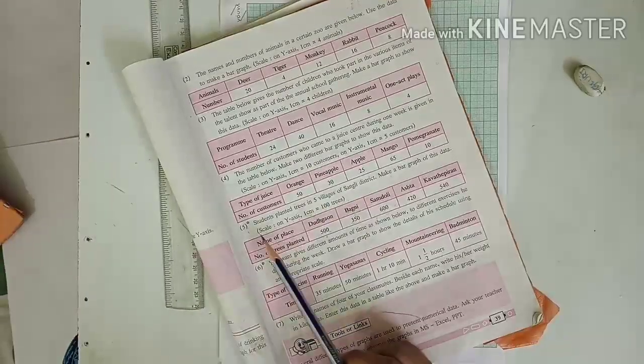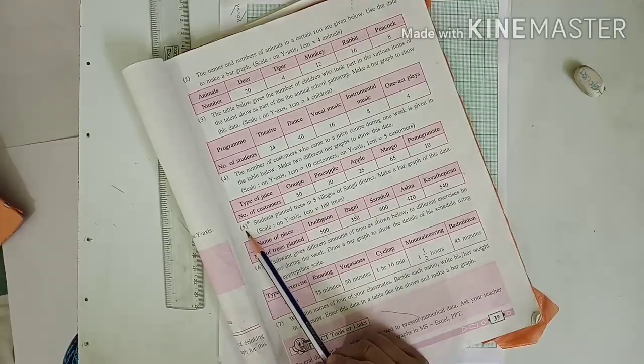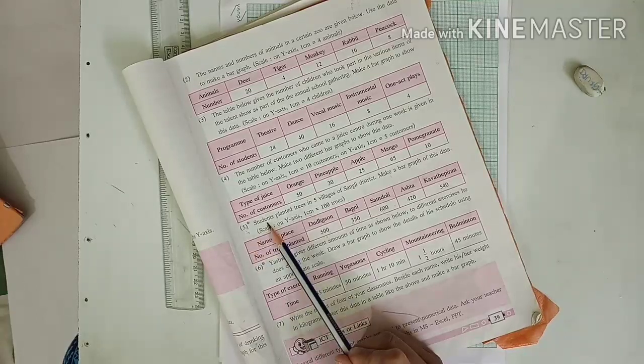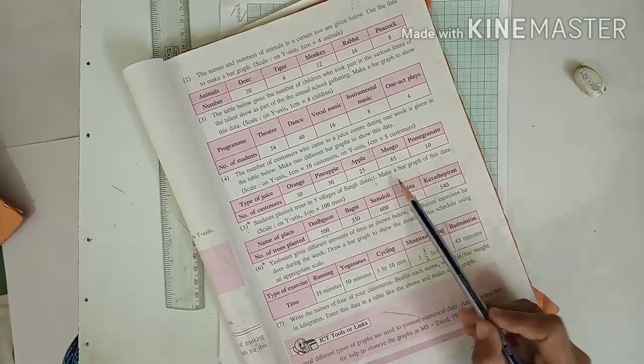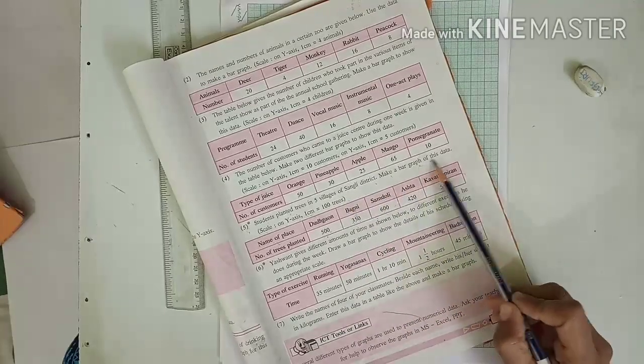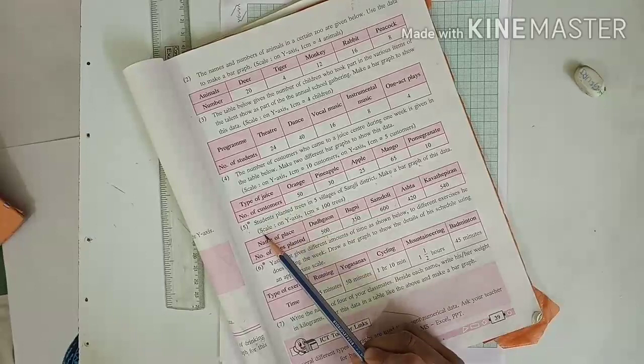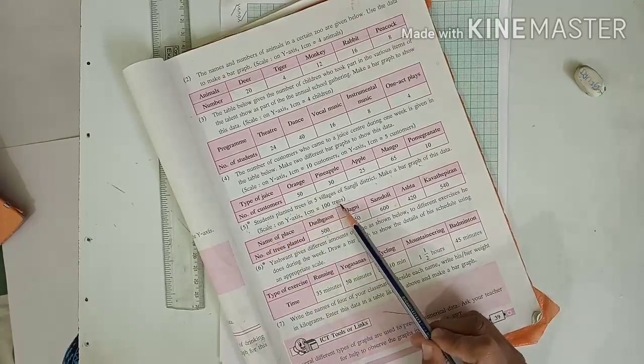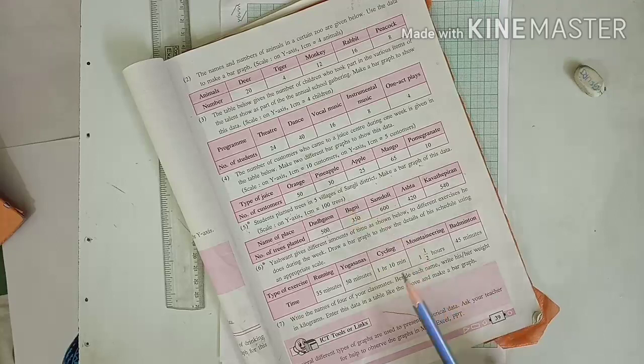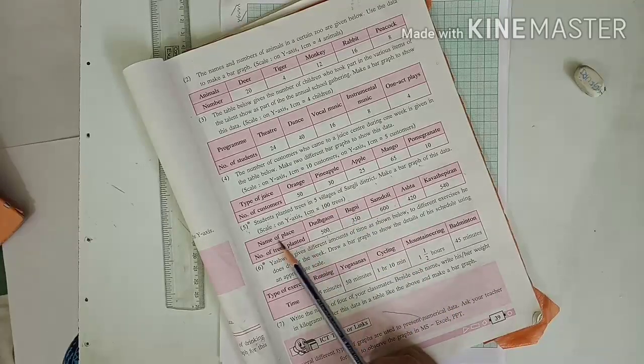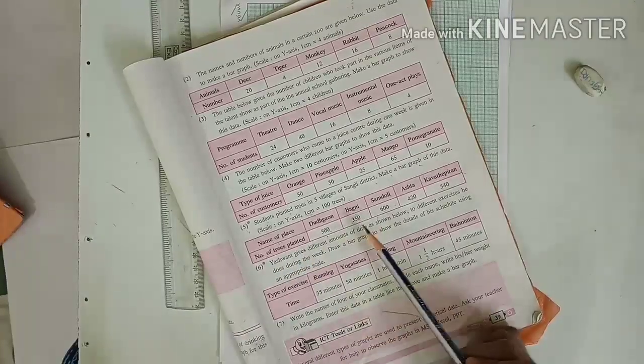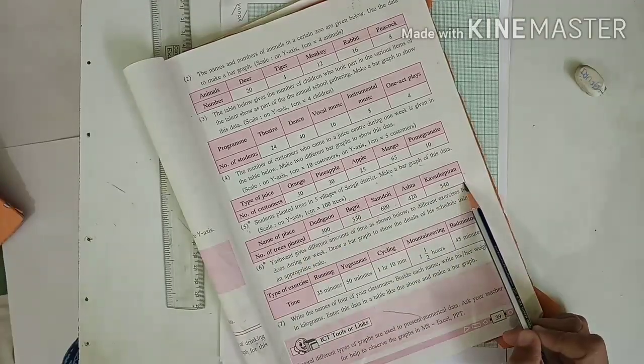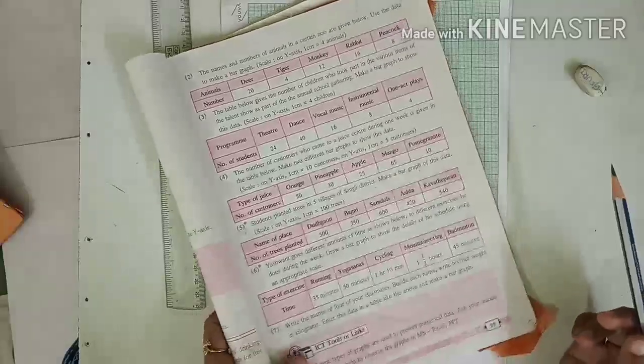Now, practice set 19, example 5. Students planted trees in 5 villages of Sangli district. Make a bar graph of this data. Scale on y-axis, 1 cm is equal to 100 trees. Name of the places are given here. Number of trees planted by the students in that village are also given here. Now we are going to draw a bar graph.